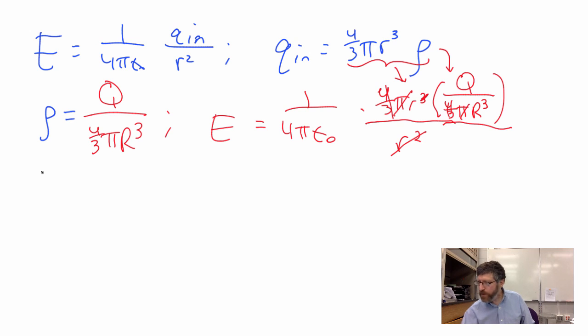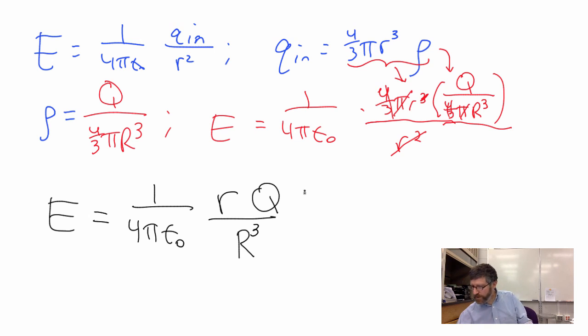We are left with E = K times rQ/R³, or KQ/R³ times r. This equals KQ/R³, which is a constant (the radius of our charged sphere), times r. Check it out. This is our electric field. The only variable is little r, I can go out to different distances.